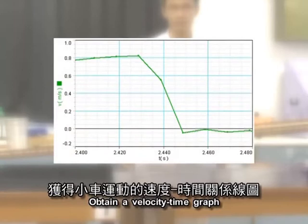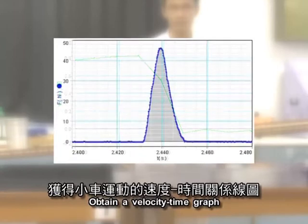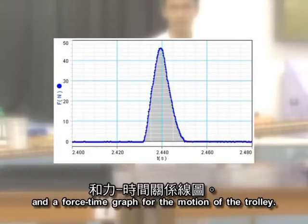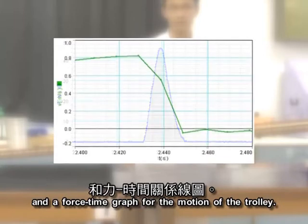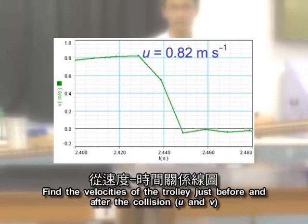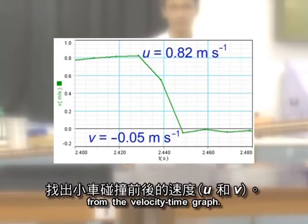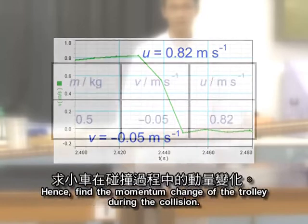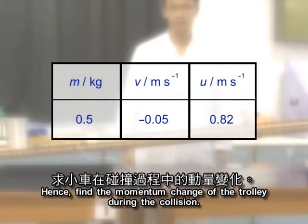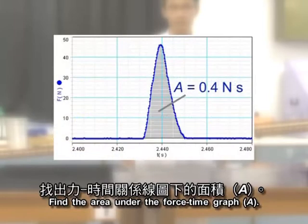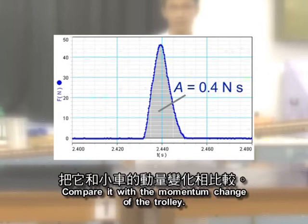Obtain a velocity-time graph and a force-time graph for the motion of the trolley. Find the velocities of the trolley just before and after the collision from the velocity-time graph. Hence, find the momentum change of the trolley during the collision. Find the area under the force-time graph. Compare it with the momentum change of the trolley.